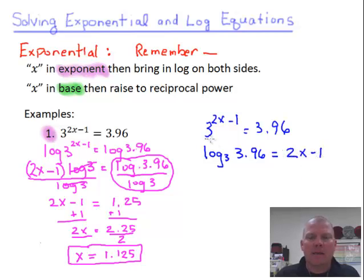Now, if I take this log base 3 of 3.96 and I use my calculator, remember, since it has the log base 3, I have to use alpha and window in my calculator and then 5. But I can type this in. And when I do this, it gives me 1.25.